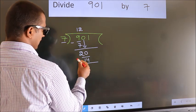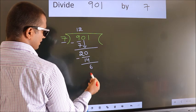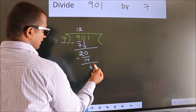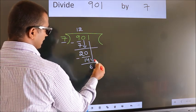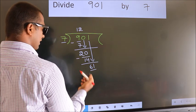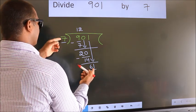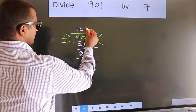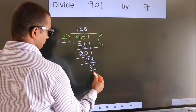Now we subtract, we get 6. After this, bring down the beside number, so 1 down, so 61. A number close to 61 in 7 table is 7 8, 56.